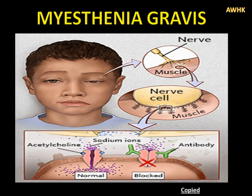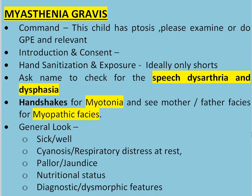Today's short case — I am going to share myasthenia gravis as a basic pathophysiology. The antibodies stop the signal. The command can be: this child has ptosis, please examine or do the GPA as relevant. With all cases you have to start with introduction and consent, followed by hand sanitization and exposure, which should be only shorts, but you have to take care of the modesty, age of the child, and weather conditions.